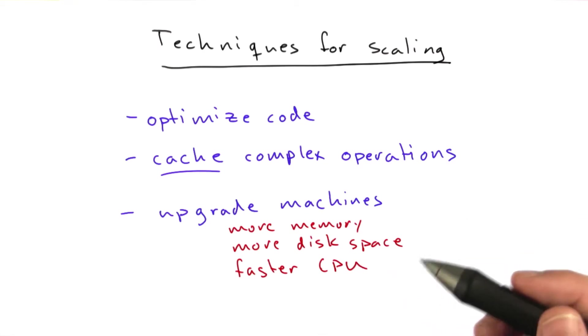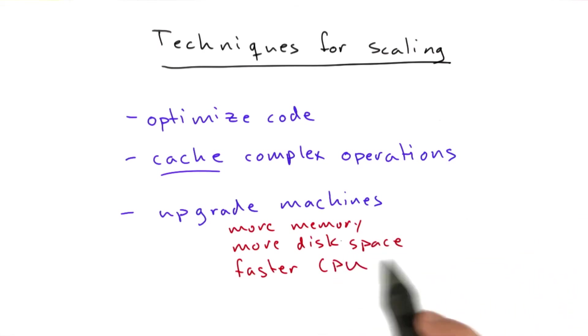Sometimes you don't have this option at all if you're using a shared platform where you don't have control of the machines. But every couple of years, machines get substantially faster, memory gets cheaper, disk space gets cheaper, CPUs come in faster varieties and greater numbers.